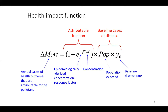The health impact function implements this framework. The right side gives the baseline number of disease cases in the population. The first parenthetical is the attributable fraction — the fraction of cases attributable to total PM2.5 concentrations. Beta is the epidemiologically derived concentration-response factor from epidemiology studies. Delta X is the PM2.5 concentration estimate. Combining all these data sources, we can estimate annual cases of health outcomes attributable to PM2.5.